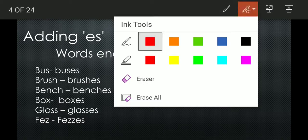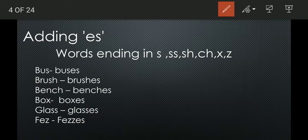The next rule is forming plural by adding ES. Words ending in S, SH, CH, X form their plural by adding ES. For example: bus → buses, brush → brushes, bench → benches, box → boxes, class → classes, fish → fishes.